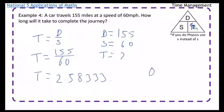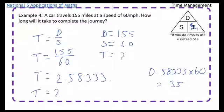So then take 0.58333 and times it by 60. And what you'll get back is you'll get closer and closer to 35. We'll write 35 minutes. So then T equals 2 hours and 35 minutes.